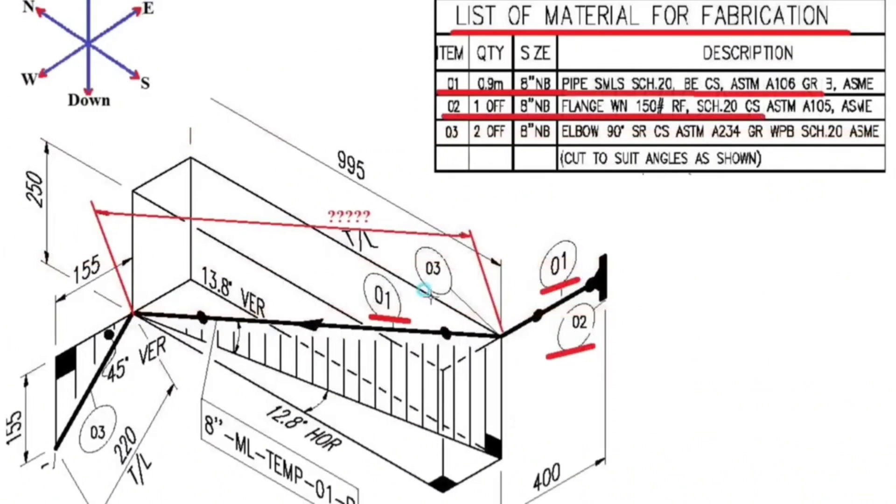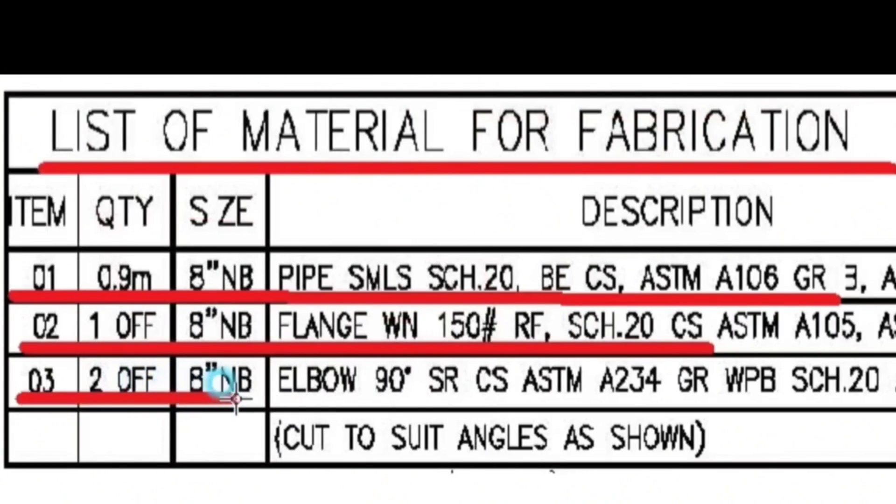Let's look at detail number 3. Item number 3, 2 pieces, 8 inches elbow, 90 degree, short radius, carbon steel, schedule 20.